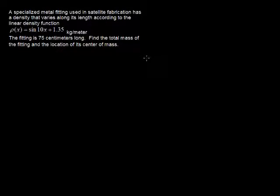In this video, I'll walk through an example of finding the mass and the center of mass of an object that has a non-uniform density. A specialized metal fitting used in satellite fabrication has a density that varies along its length according to the linear density function, rho of x equals sine of 10x plus 1.35 kilograms per meter. The fitting is 75 centimeters long. Find the total mass of the fitting and the location of its center of mass.